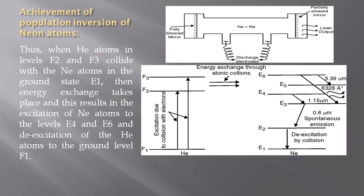The Helium atoms are in the excited state F2 and F3, having energy corresponding to those levels, while Neon atoms are in the ground state E1. Energy exchange then takes place, and this results in the excitation of Neon atoms to the levels E4 and E6, and the de-excitation of the Helium atoms back to the ground level F1.